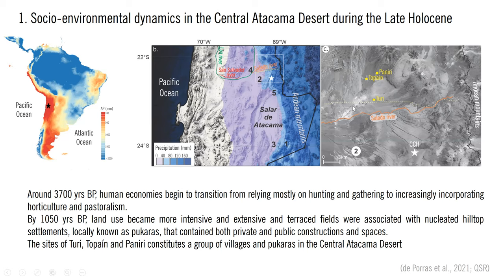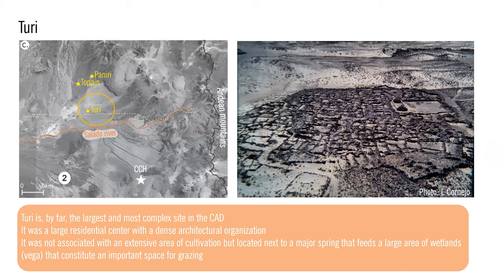The sites of Turi, Topain, and Paniri constitute a group of villages and pucaras in the central Atacama Desert, which form one of the several similar farming-pastoral residential sites clustered during the late Holocene. Turi is by far the largest and most complex site of the central Atacama Desert. Turi was a large residential center with a dense architectural organization, but in striking contrast with its size, density of occupation, and architectural complexity, it is not associated with an extensive area of cultivation. It's located next to a major spring that feeds a large area of wetlands called vegas, which constitutes an important space for grazing today, as was probably true in the past.